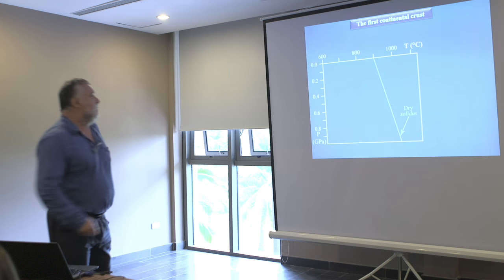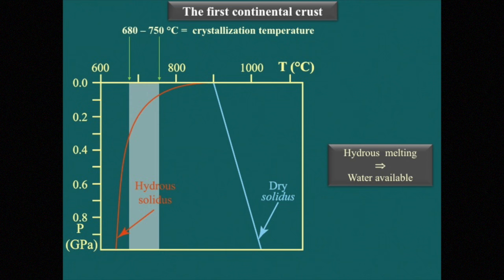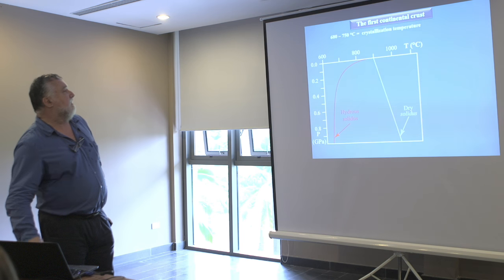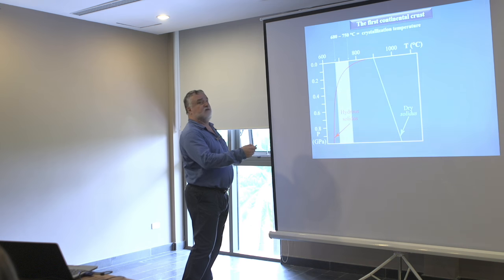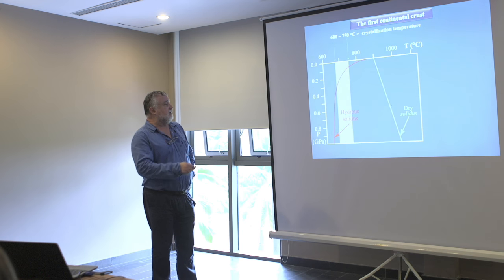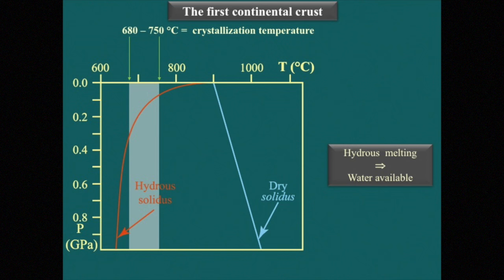This has also some consequences. Looking at a pressure-temperature diagram with the dry solidus for granite — meaning no water in the system — and the hydrous solidus, you can see that water decreases significantly the temperature of the onset of melting of a granite. If we plot the temperature range of crystallization of these zircon crystals, we see this temperature is only consistent with hydrous melting. That means water was available during the genesis of this granite.